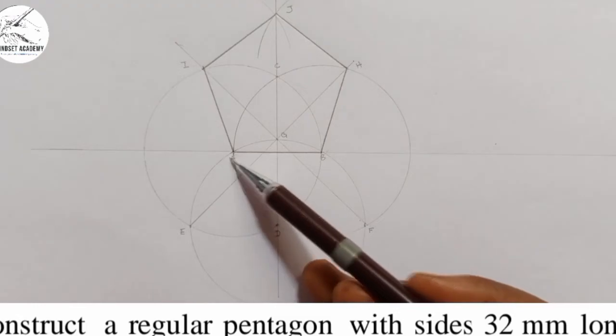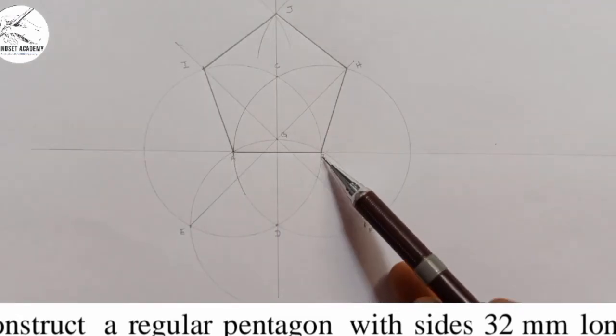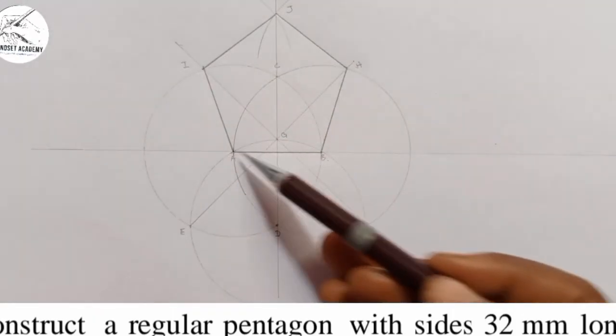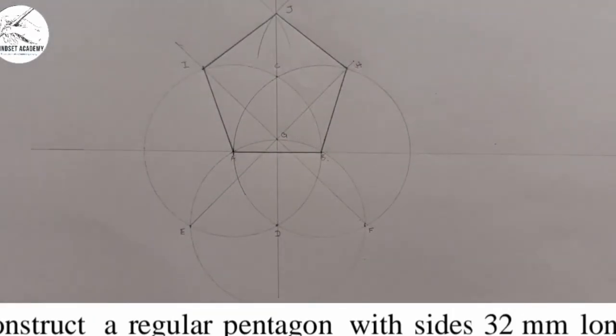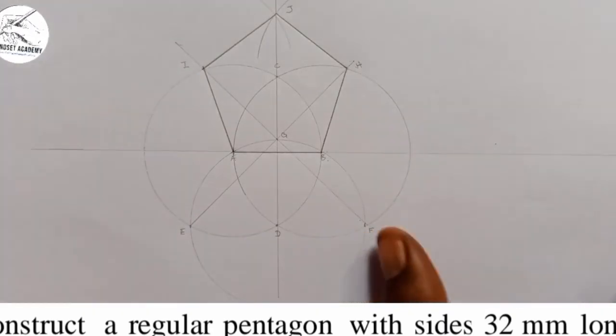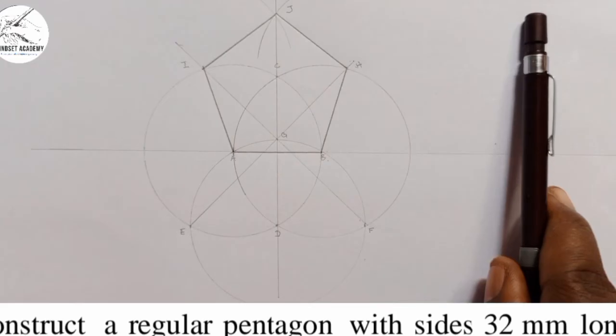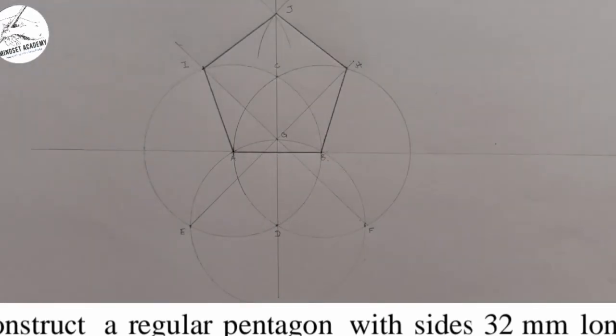If you look at AB is equals to BH is equals to HJ and so on and so forth. So, each of the sides is 32 millimeter. So, you are going to apply your principle. I told you earlier. You need to write what you have done using your principle of lettering. You don't know how to letter, you can click on this link and it will direct you to the point where you will learn how to letter.